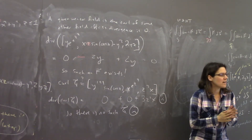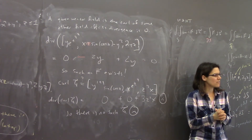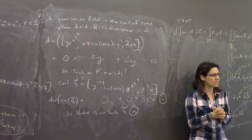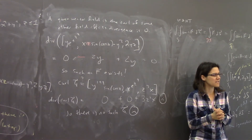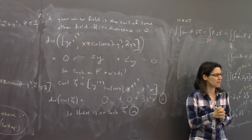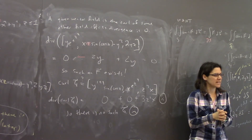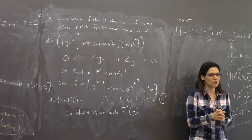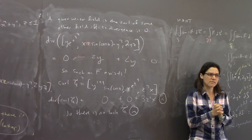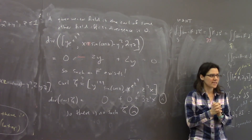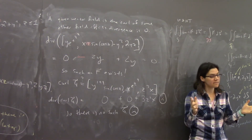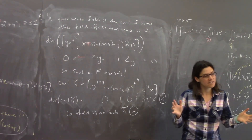There's a problem on your homework where you have to use a field and see it as the curl of something else on your WebWork. You would hope the divergence of that thing comes out to zero.